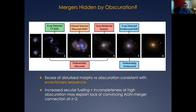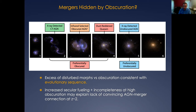Our conclusion was that the reason we're not picking up a convincing AGN-merger connection at redshift 2 is a combination of two things: increased importance of secular fueling — you don't need mergers to fuel most moderate-luminosity AGN — and incompleteness at high obscuration. Together, these may explain why we're not seeing the AGN-merger connection. Many AGN are triggered by secular processes at redshift 2, and we're not picking up the ones buried in train-wreck mergers. Those can be revealed through infrared selection or other methods.